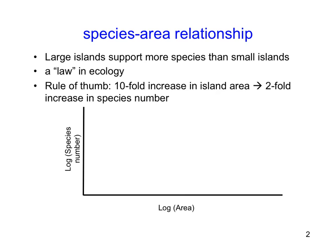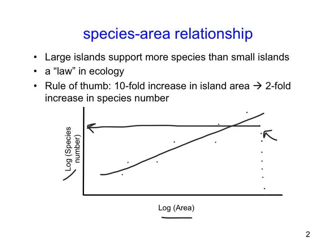The first thing we want to look at is the species-area relationship, which is one of the only real laws in ecology — we just observe this relationship over and over again. It's a positive slope of log area on the x-axis and log species number on the y-axis, and that slope is a fitted line among the data. The general rule of thumb is that a tenfold increase in island area generates a twofold increase in species number.